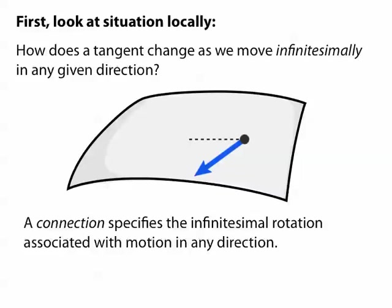More formally, a connection is an angle-valued one form, which means that we plug in a tangent direction and it spits out an infinitesimal change in angle.